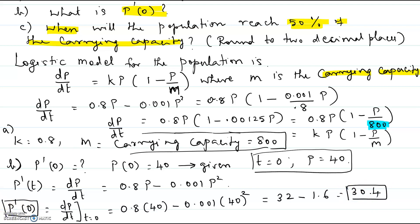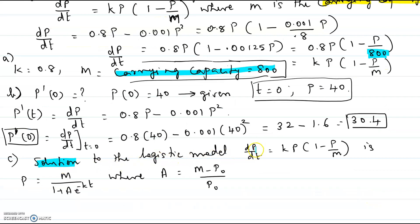So p prime of 0 equals 30.4. The solution to the logistic model dp/dt equal to kp times 1 minus p over m is p equal to m over 1 plus a times e to the negative kt, where a equals m minus p-sub-0 divided by p(0). Here p-sub-0 is the population at time t equal to 0. We need to determine the solution and then find what time the population becomes 50 percent of the carrying capacity.